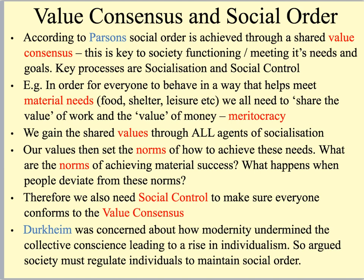What's important to think about here is what happens when people deviate from these norms. If you've studied crime and deviance, you'll have looked at this — what happens when people deviate from the normal way of gaining material success? You might want to think about Merton's analysis here with the innovator. How do people react when they see crime? If you find out about people avoiding paying their taxes, stealing cars, or drug dealing for material reward, we treat those people quite negatively. We can be quite hostile to them, the media will demonise such people, so we punish people who do not conform to our norms.